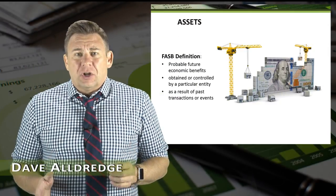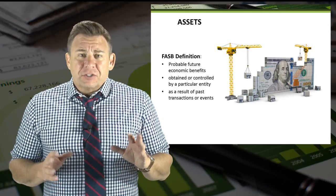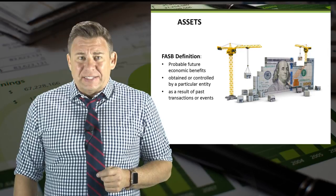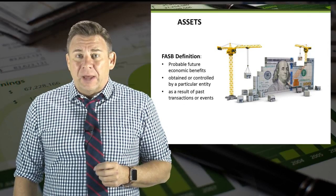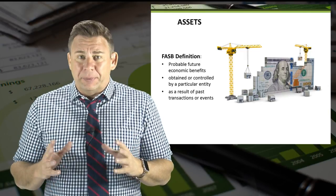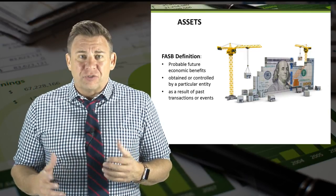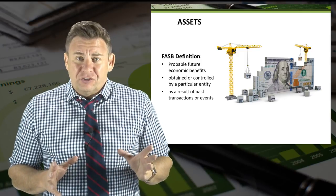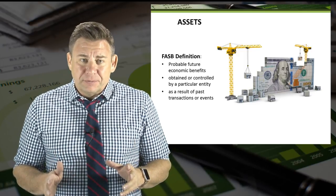Welcome to this module overview related to assets. For starters, I want to show you the FASB definition of an asset. It's the probable future economic benefits obtained or controlled by a particular entity as a result of past transactions or events. That definition sounds very legal, so let's break it out into three parts.